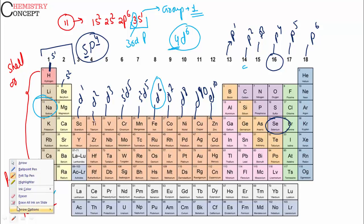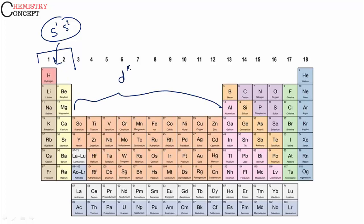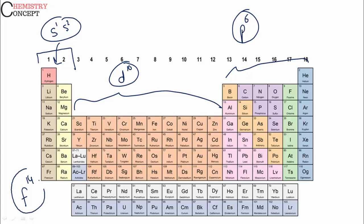There is one more important point. Because the s sub-shell can hold only two electrons — S1 and S2 — the s-block contains only two groups. The d sub-shell can hold a maximum of 10 electrons, so there are 10 groups in the d-block. The p sub-shell can hold a maximum of 6 electrons, so there are 6 groups in the p-block. The f sub-shell can hold a maximum of 14 electrons, which is why there are 14 elements in each of the lanthanoid and actinoid series.